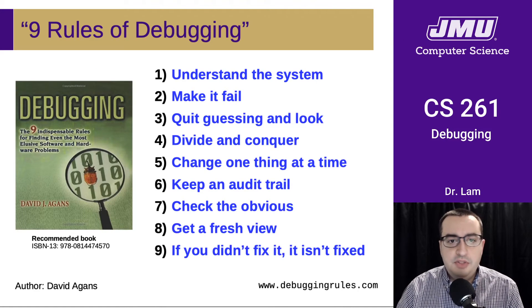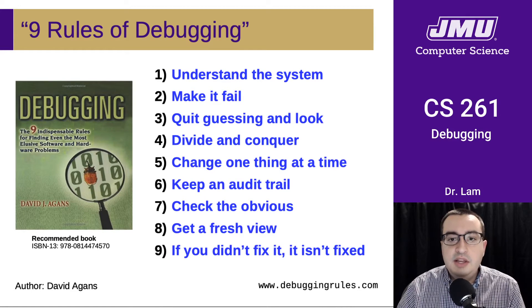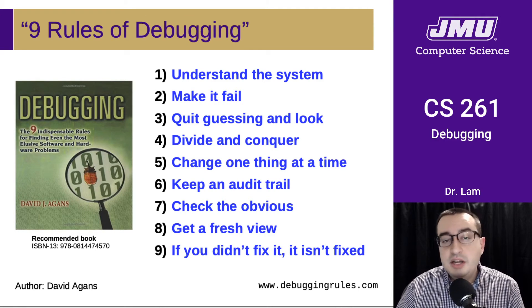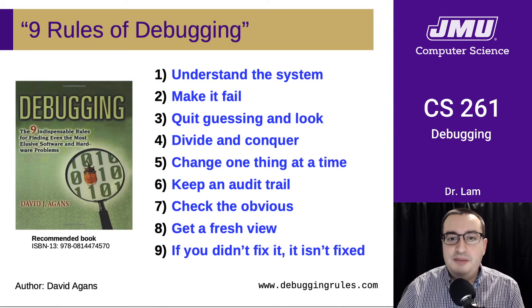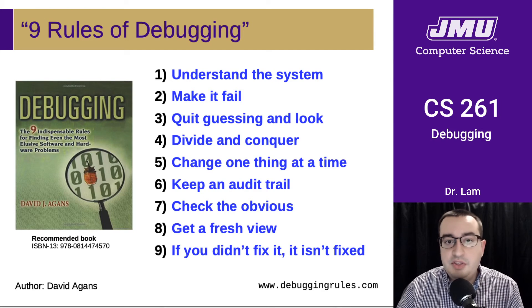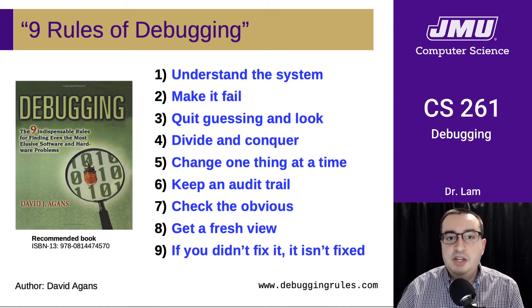I'd also like to recommend a book called 'Debugging' by David Agans. It gives nine rules that I find very helpful in thinking about how to debug. Reading it won't make you a perfect debugger, but it'll give you a lot of things to think about, and the author tells some humorous stories about bugs and defects encountered over their career. The rules are: understand the system, make it fail, quit guessing and look, divide and conquer, change one thing at a time, keep an audit trail, check the obvious, get a fresh view, and if you didn't fix it, it isn't fixed.